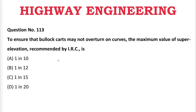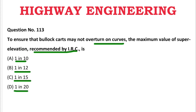Next question: To ensure bullock carts may not overturn on curves, the maximum value of super elevation recommended by IRC is — A: 1 in 10, B: 1 in 12, C: 1 in 15, D: 1 in 20. The correct answer is C, 1 in 15.